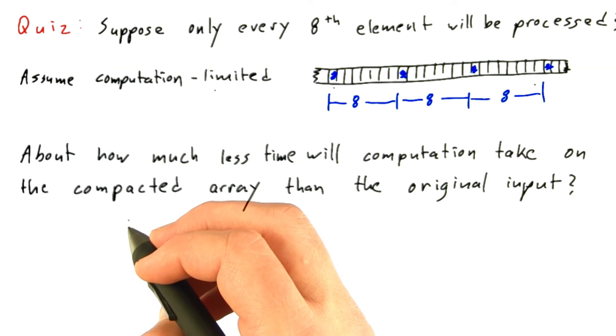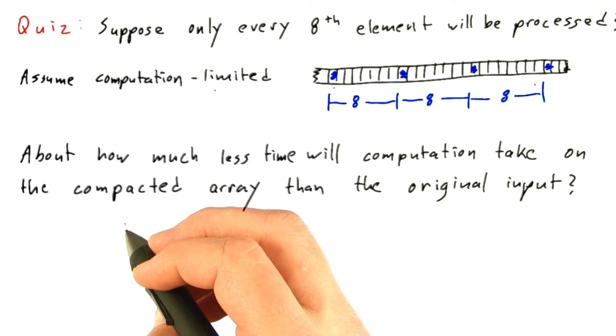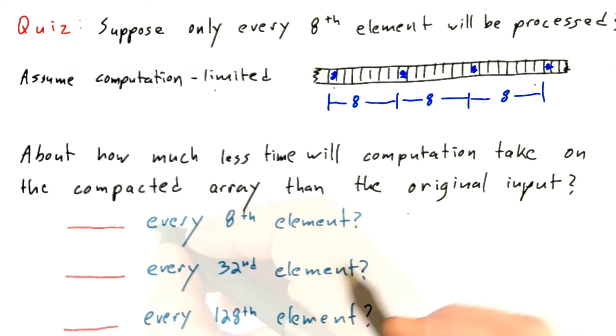And then I want to ask, what if only every 32nd element will be processed, and what if only every 128th element must be processed? For the answer, I'm looking for an integer like 4, 8, 16, 32, or 1 - you're telling me whether it's 4 times faster, 8 times faster, 1 times faster, and so on.